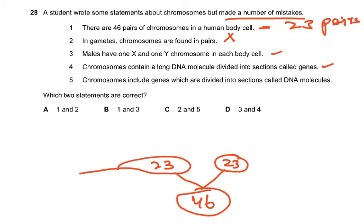Statement five says chromosomes include genes that divide into sections called DNA molecules — that is incorrect; it has it the wrong way round. The answer to question 28 is D, which is statements 3 and 4. Gametes only have one of each pair, and the chromosome is made up of DNA which is divided into sections called genes. You must be very clear on the relationship between gene, DNA, and chromosome.